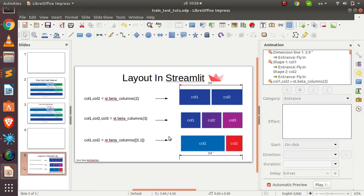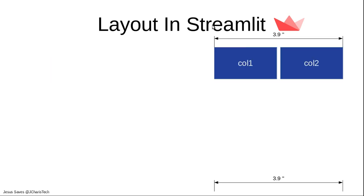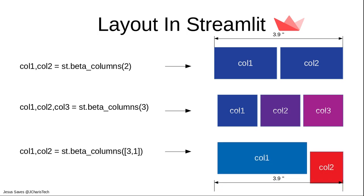To summarize: to create a layout, use `st.beta_columns`. For equal columns, pass a number. For custom widths, pass a list of relative sizes like `[3, 1]` and unpack accordingly. In the next session, we'll build our actual movies app using these concepts. Thanks for watching — see you in the next session, stay blessed, bye!